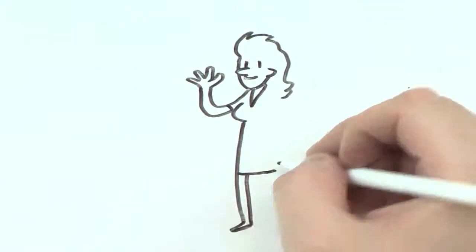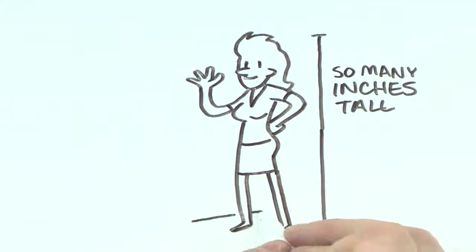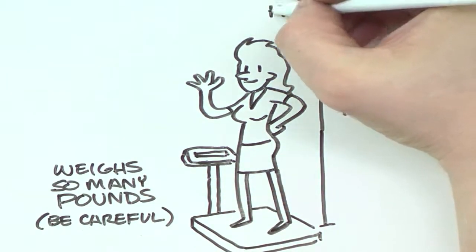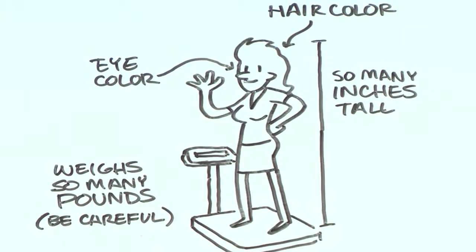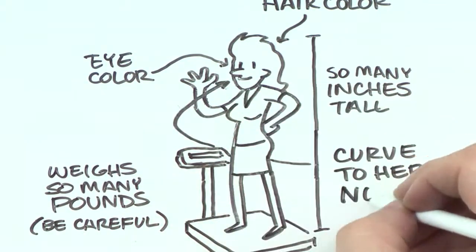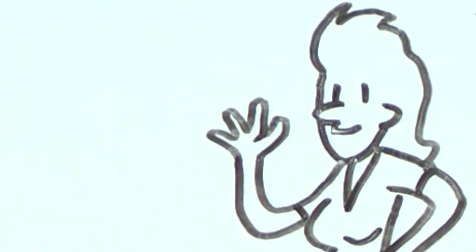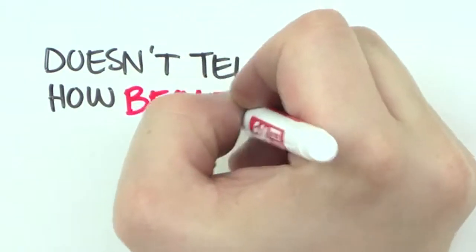Think of it like your fiancé. You can say she is so many inches tall, weighs so many pounds, has a certain shade of hair or color of eye or curve to her nose. But none of that really explains who she really is or how beautiful she is.